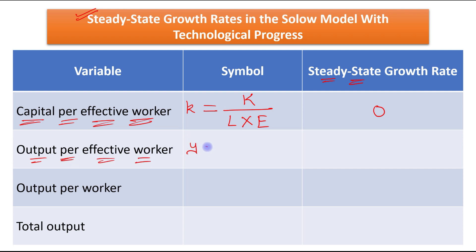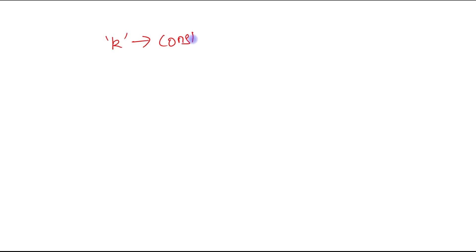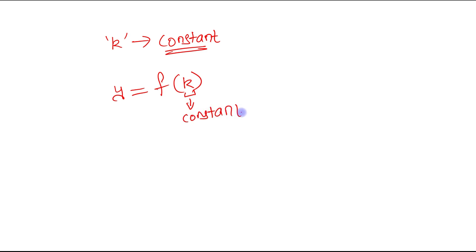Next, output per effective worker is denoted by small y, which is equal to total output divided by the effective number of workers. In the steady state, capital per effective worker is constant, and output per effective worker is a function of capital per effective worker. So if capital per effective worker is constant, then output per effective worker must also be constant.